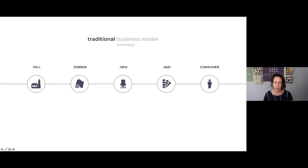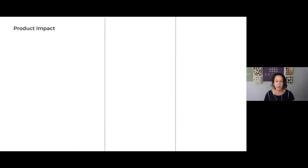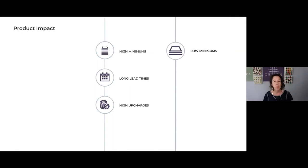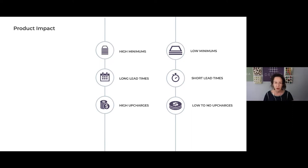It's a really long drawn-out model with a lot of people in between, and this is where print on demand and customization is really changing this model. From a product impact standpoint, the traditional model means very high minimums for customs, long lead times, and very high up-charges, because the mill didn't want to interrupt its run unless it was really going to be worth their while. With on-demand printing you're now looking at low minimums, short lead times, and low to no up-charges, which opens up a world of possibilities and gets you closer to your end consumer.